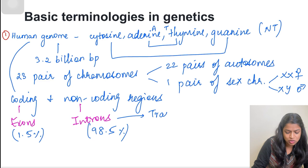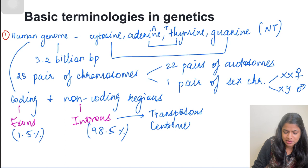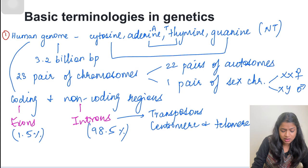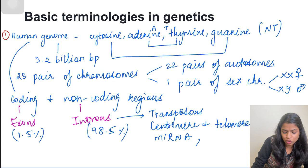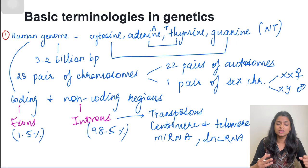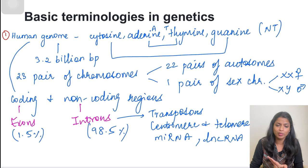Apart from transposons, we have centromeres and telomeres, which are parts of the human chromosome. The centromere is the central part while the telomere is the end part. We also have non-coding RNAs like micro RNA and long non-coding RNA, also called lncRNA. These micro RNAs and long non-coding RNAs are very important in gene regulation — they are usually involved in the silencing of genes based on whether gene expression is going to occur or not.